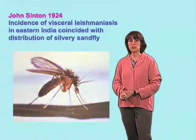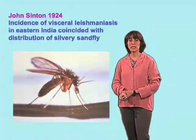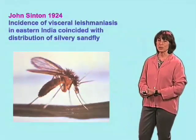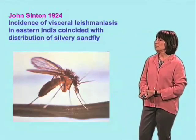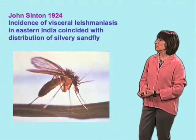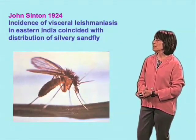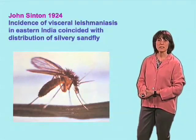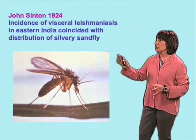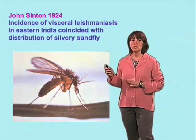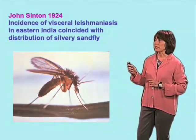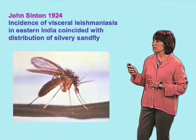It was only decades later that the first hint for which insect could be involved in transmission was made by John Sinton, when he realized that the incidence of visceral Leishmaniasis in eastern India coincided with the distribution of a specific type of sandfly — the silvery sandfly.